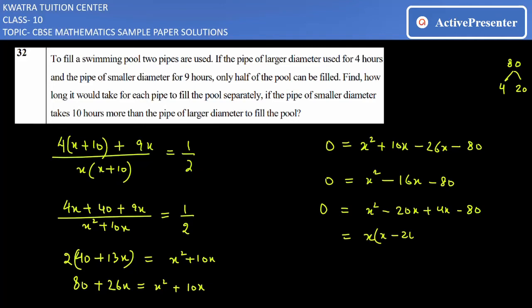Now you can take common from the first two terms, which will be x(x - 20), then you have the last two terms, 4 common, so (x - 20). And you have (x - 20) as one of the factors and the other factor is (x + 4) = 0.